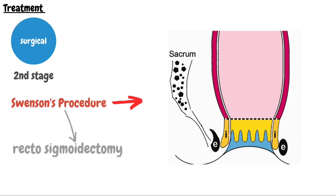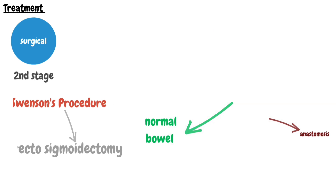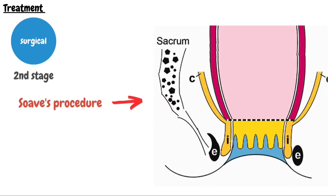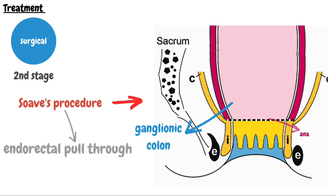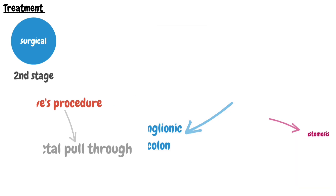The third is the Soave operation, also called endorectal pull-through, in which the mucosa of the rectum is removed and the ganglionic colon is pulled through the muscle sleeve of the rectum and anastomosed with the anus. The optimal age for reconstructive surgery is six to eight months after temporary colostomy. Now let's talk about the nursing management of Hirschsprung's disease.